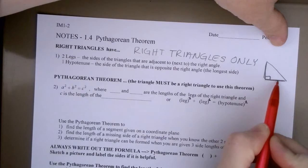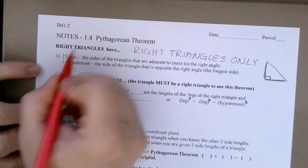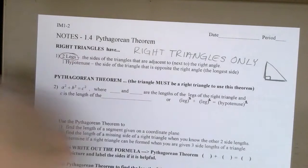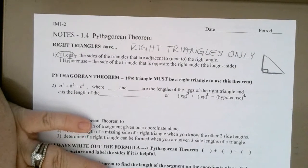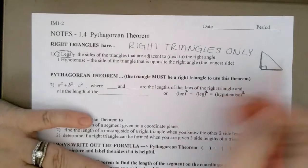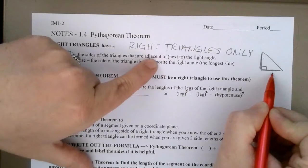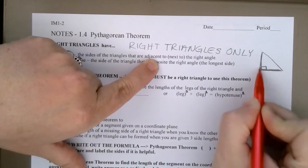The two sides that make up the right angle are called legs. They are the sides of the triangle that are adjacent to, meaning they make up that right angle.